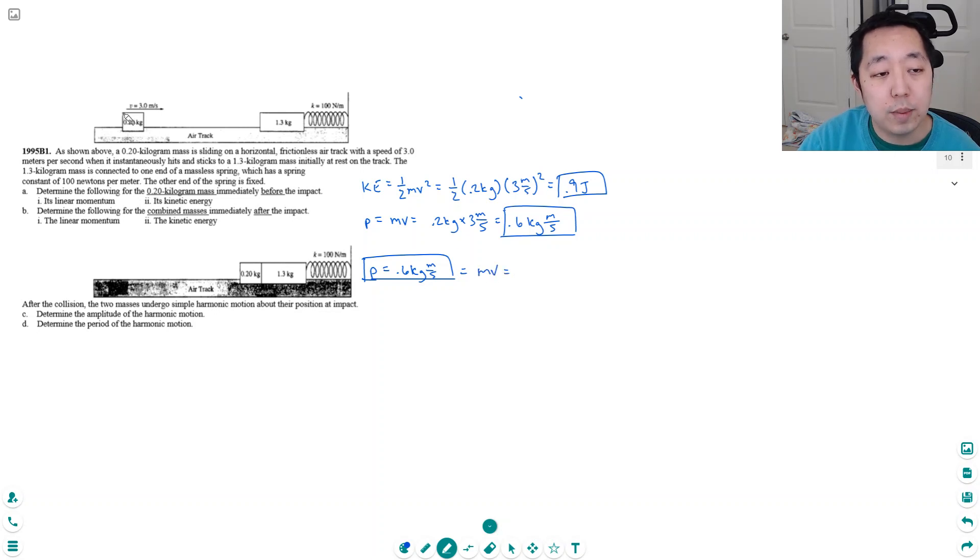In this case the mass of the two things is 1.5 kilograms because it's both of them moving together, the 0.2 and the 1.3 times v. So v is equal to 0.6 kilograms meters per second divided by 1.5 kilograms and that's 0.4 meters per second. So now I can calculate their kinetic energy. It's equal to one half mv squared.